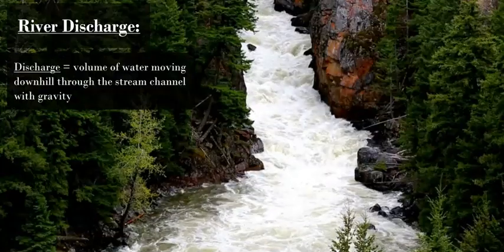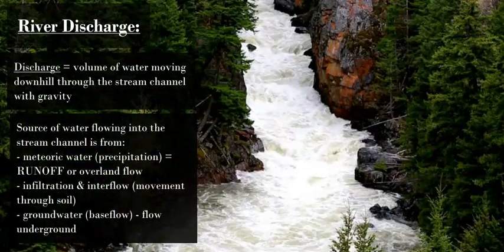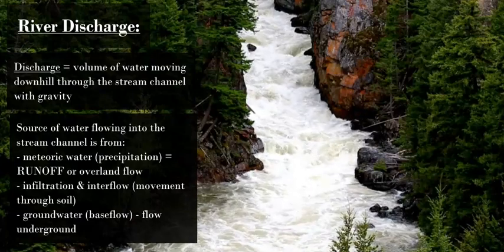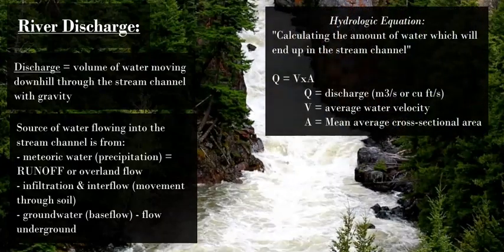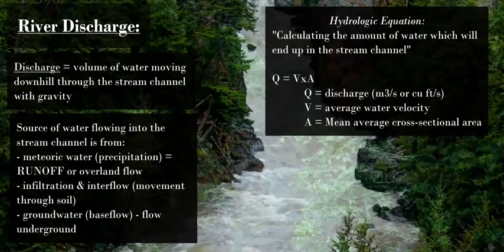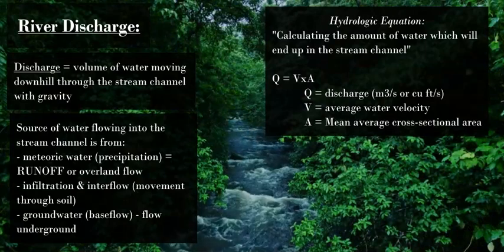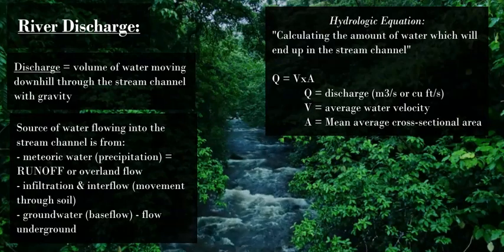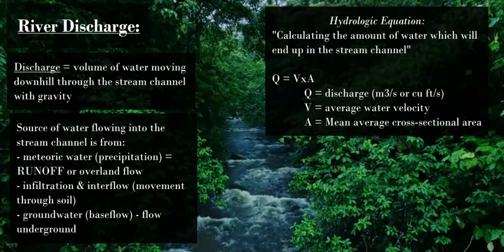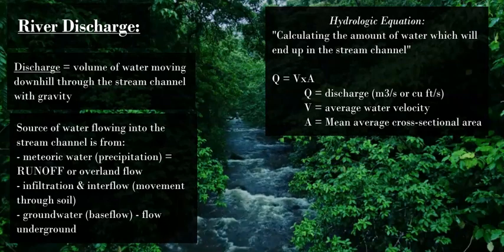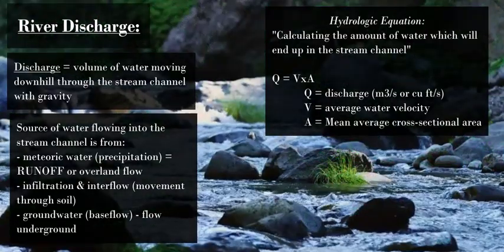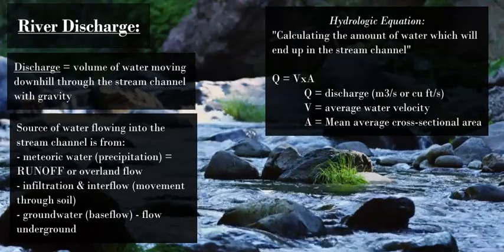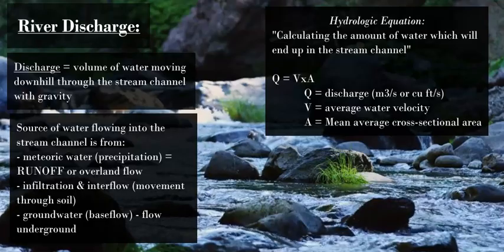In discussing river discharge — the amount of water flowing through the river channel down towards the ocean — we have to discuss runoff and the hydrologic equation. This is the amount of water that falls as precipitation, which is the total meteoric water source. You subtract water that flows into the ground as groundwater, water held in soil, water captured by plants and lost through transpiration, and water lost through evaporation. What remains is the water that flows over the land, called runoff, which naturally flows into streams of various sizes to form a river.